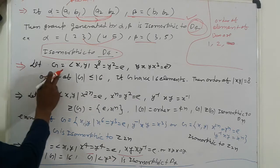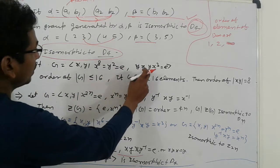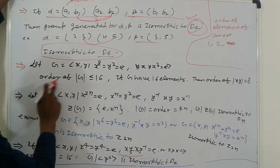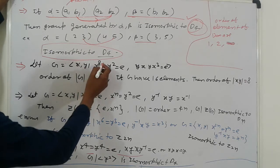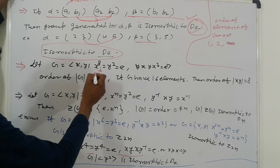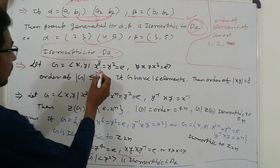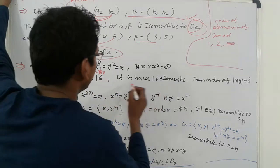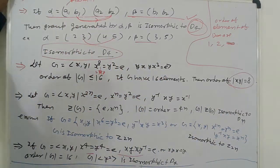Let G = ⟨x, y | x^8 = y^2 = e, yxy = e⟩. Then the order of G is 16, since order = 2n = 2 × 8 = 16. G has 16 elements and the order of xy is 8.